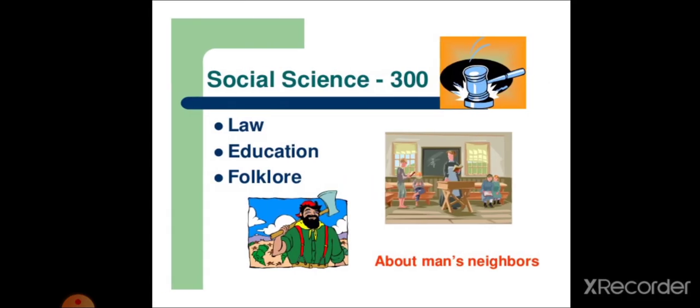About men's neighbor. Social science, 300. Man is thinking about men's neighbors. And this comes under the category of social sciences. The number for which is 300. Law, education, folklore, all comes under this particular category.